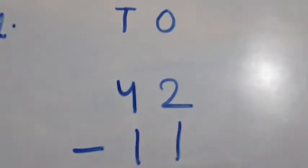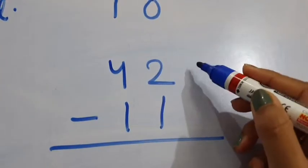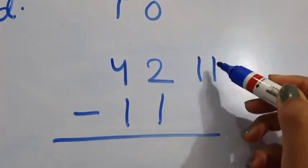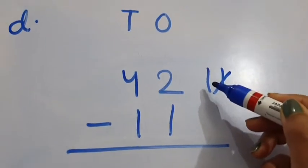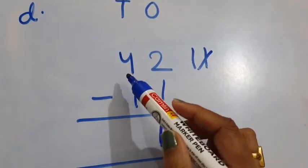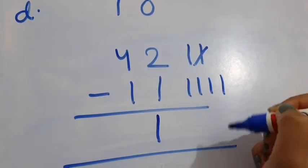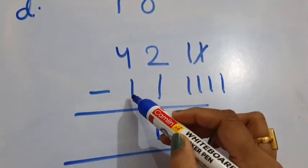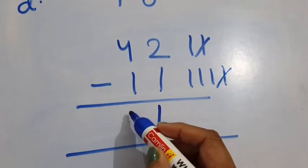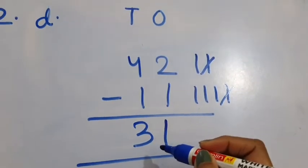2D: 42 minus 11. See the 1's column: 2 minus 1. Draw 2 lines and out of these 2 lines, remove only 1 line. So only 1 line is left — we will write 1 in the 1's column. Now see the 10's column: 4 minus 1. Draw 4 lines and remove only 1 line. So 3 lines are left — we will write 3 here. So 42 minus 11 is equal to 31.